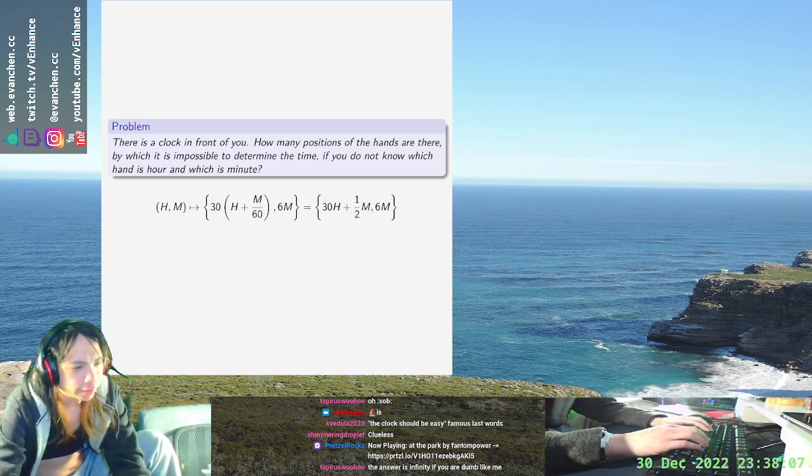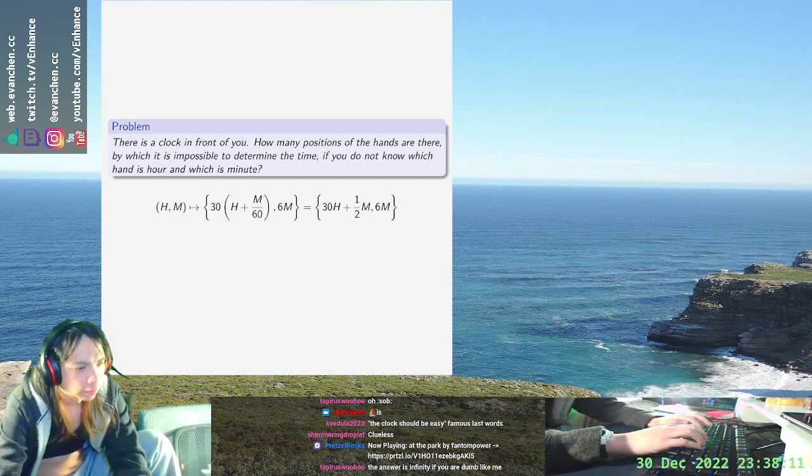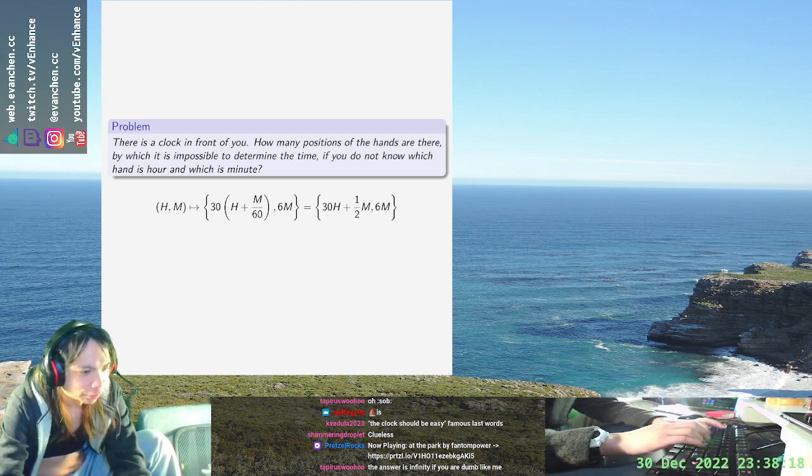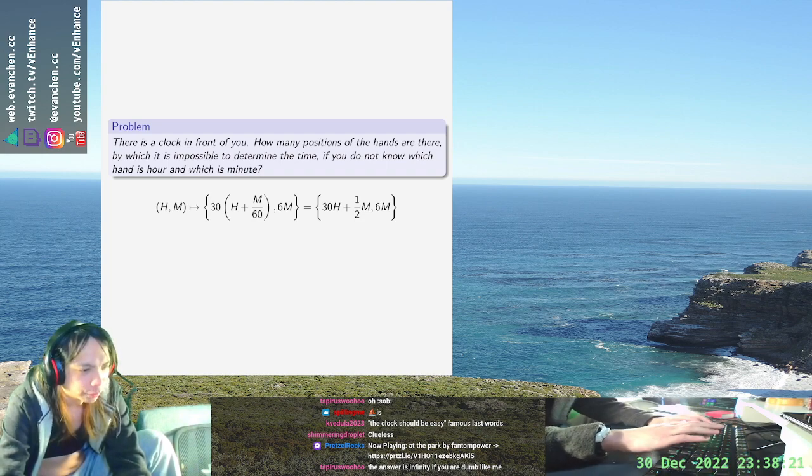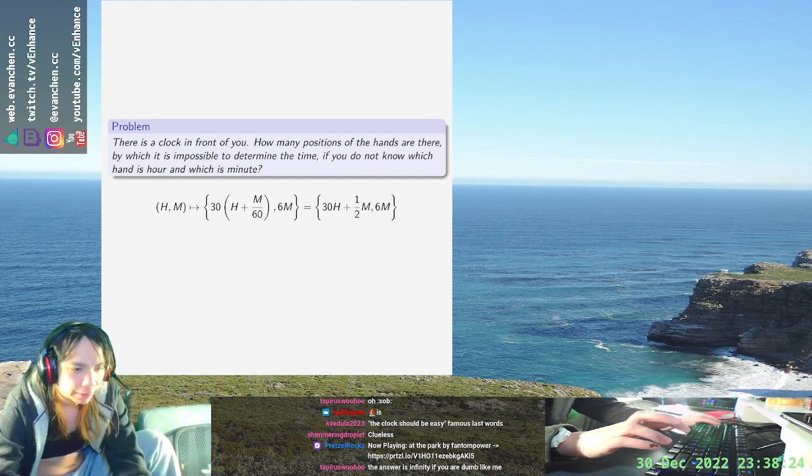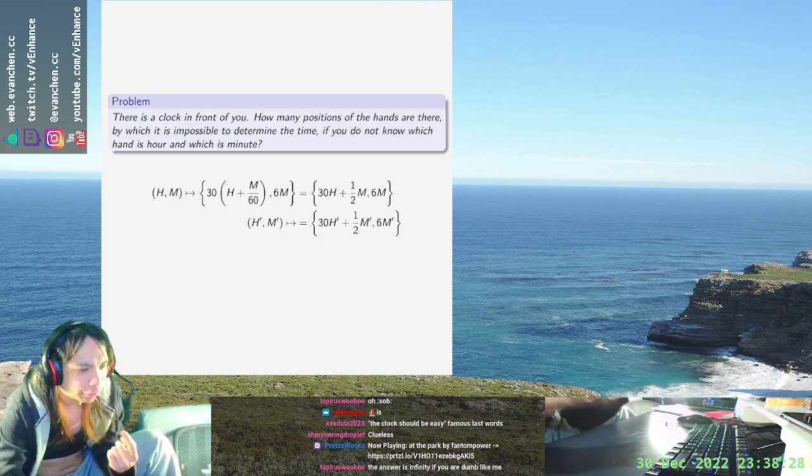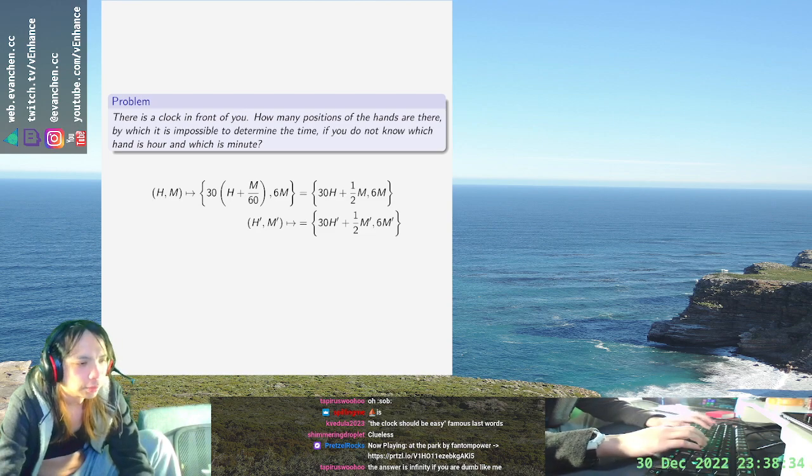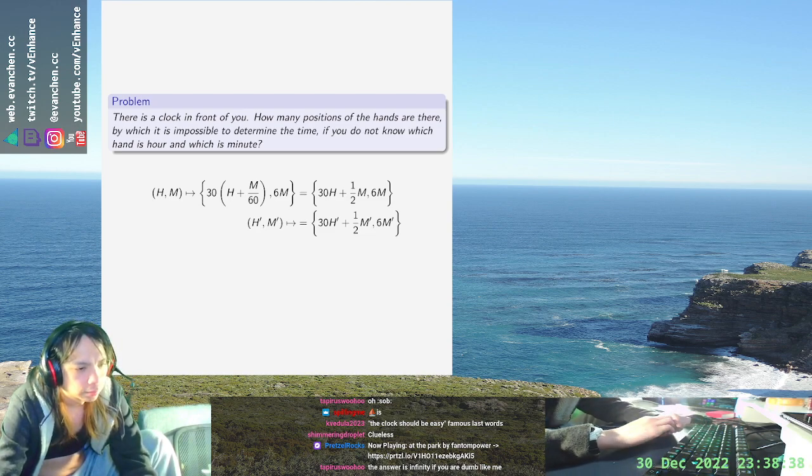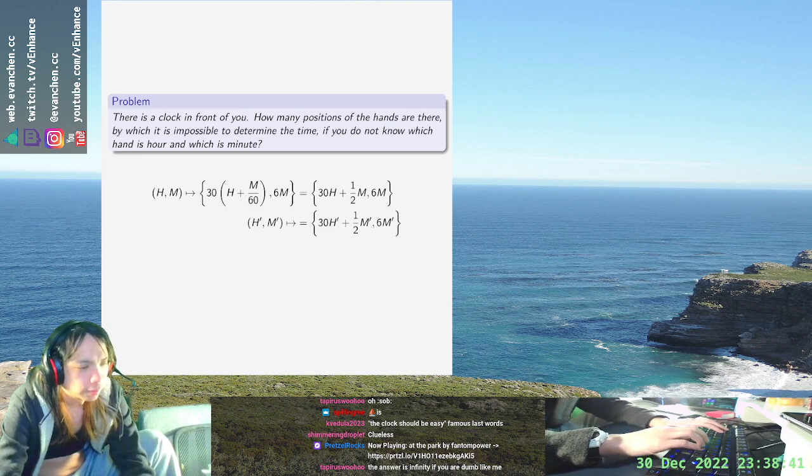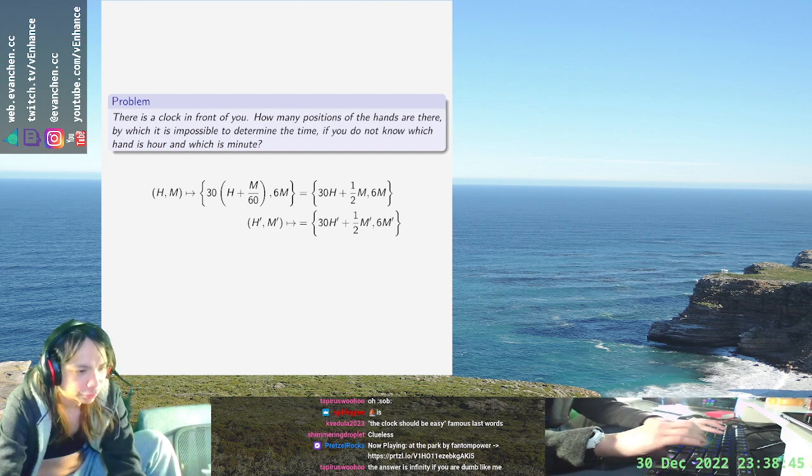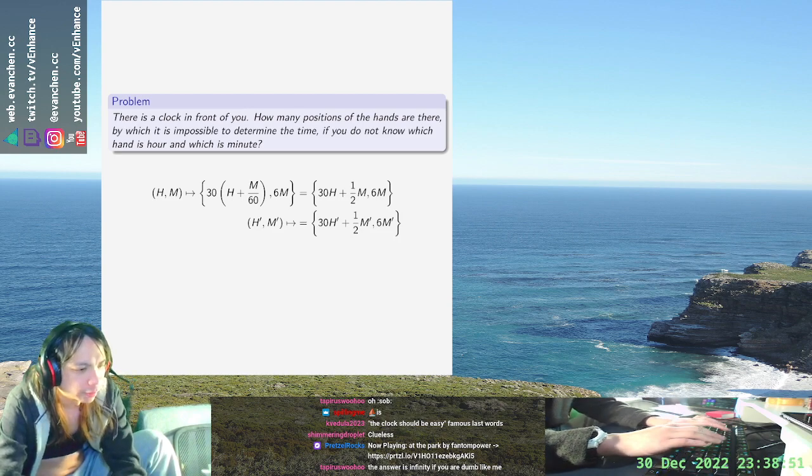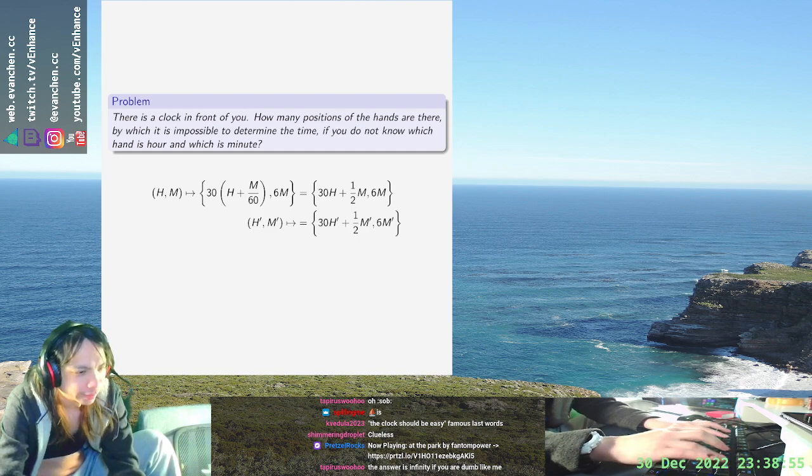So 30h plus half m, 6m. Okay, and then we want this to be given by like some other time h prime m prime, where the unordered set is h prime and m prime. So they should go in the opposite order because a linear system is determined, it's not a degenerate system. So we would need 30h plus half m equals 6m prime, and 30h prime plus half m prime equals 6m.